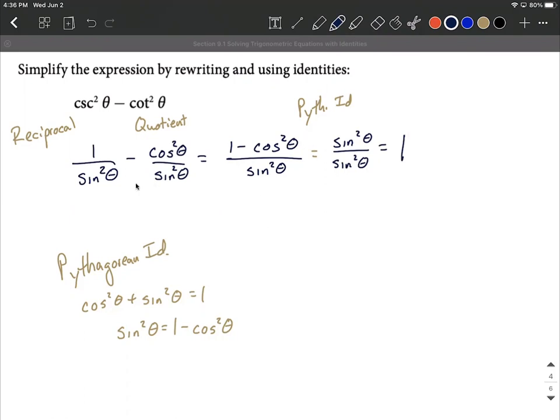So as you get going on these, I always suggest keep track of which identities you utilize along the way, but rewrite everything in terms of sines and cosines. And then most of it's just algebra from there. You know, two separate fractions is going to be more simplified if it's a single fraction. Whenever you have squares, be thinking Pythagorean identity to rearrange and simplify them.